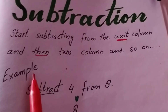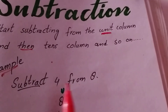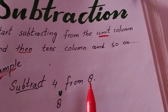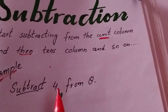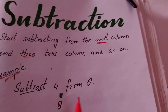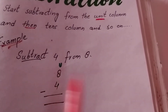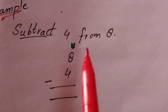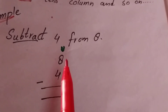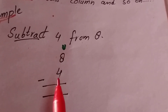Now there is an example. Subtract four from eight. Eight is in the unit place, four is in the unit place — it's a single digit. We write it down. In unit subtraction, we write the bigger value on the top and the lower value on the bottom.